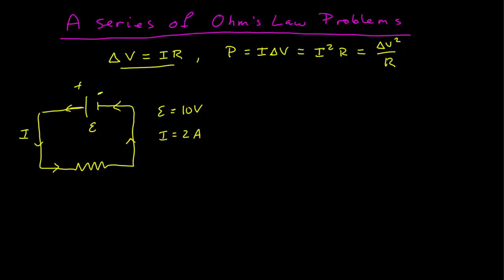All right, so the resistance in the circuit is calculated by delta V over I, so we find that to be 5 ohms. And then the power can be I times delta V, which is the voltage drop across the resistor, which is the EMF, so this is just 20 watts. And of course it also works here: I squared is 4 times the resistance 5, that's 20, or here delta V squared is 100 divided by 5 is also 20.